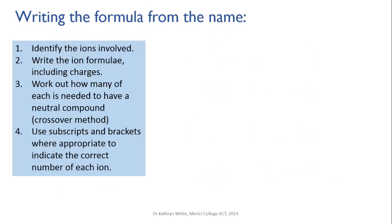The next thing you need to be able to do is to write the formula from the name. This is slightly trickier but as long as you learn the rules and practice a bit you won't find it too difficult. The steps are these: first you need to identify the ions that are involved, then you need to write out the ion formulae including the charges on the ions.